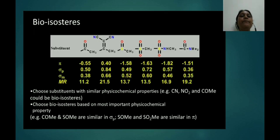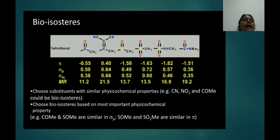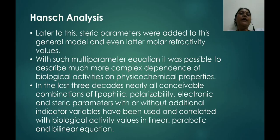Bioisosteres are groups with similar physico-chemical properties — for example, CO, CS₃, C=C, CN share similar structures. Their π values (hydrophobicity), σp (para electronic), σm (meta electronic), and MR (molecular refractivity) values are tabulated. This helps in choosing substituents with similar physico-chemical properties; for example, CN and NO₂ could be bioisosteres. Bioisosteres are chosen based on the most important physico-chemical property.